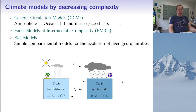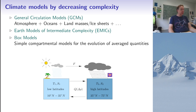I also talked about different types of climate models, going from very detailed general circulation models — computer models including the dynamics of the atmosphere, the ocean, land masses, and ice sheets — down to very simple box models. I argued that while you can't really use simple models for predictions, they are useful to understand basic mechanisms and to make sense of what you see in detailed GCM simulations.